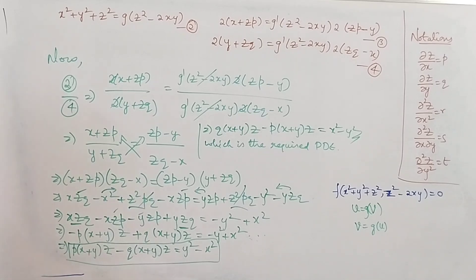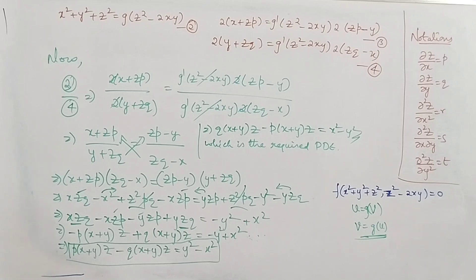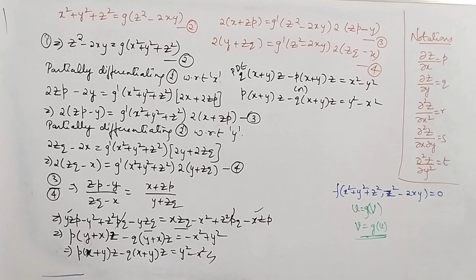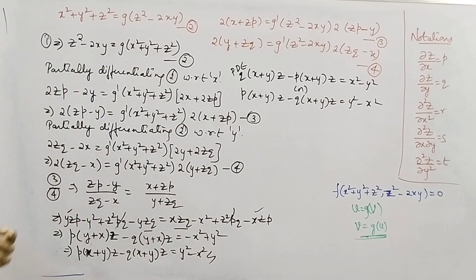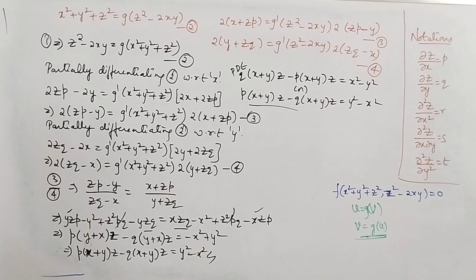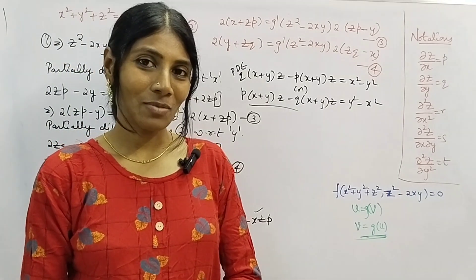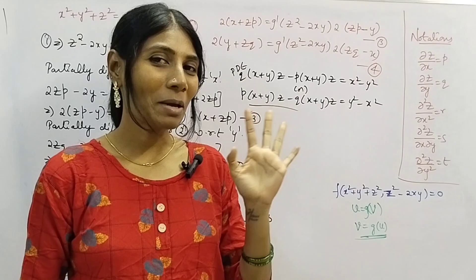We have seen this problem solved using u = g(v). If we use v = g(u) you will get the same equation — multiplying both sides by −1 gives the equivalent form. We have solved a problem from partial differential equations in this video. I hope you understood; we'll see you in the next video. Until then, bye bye.